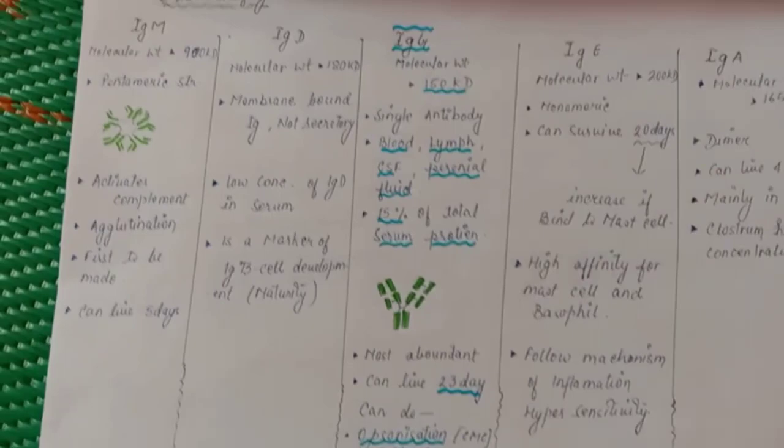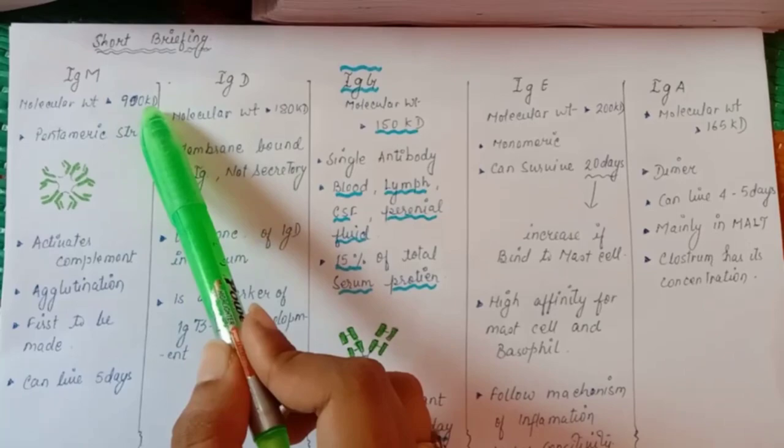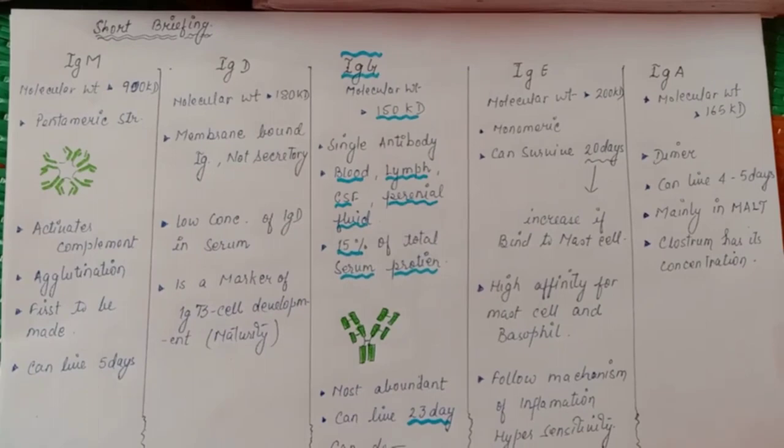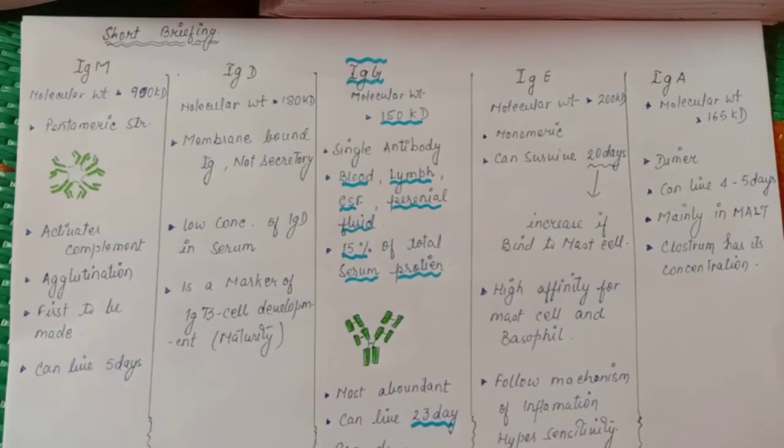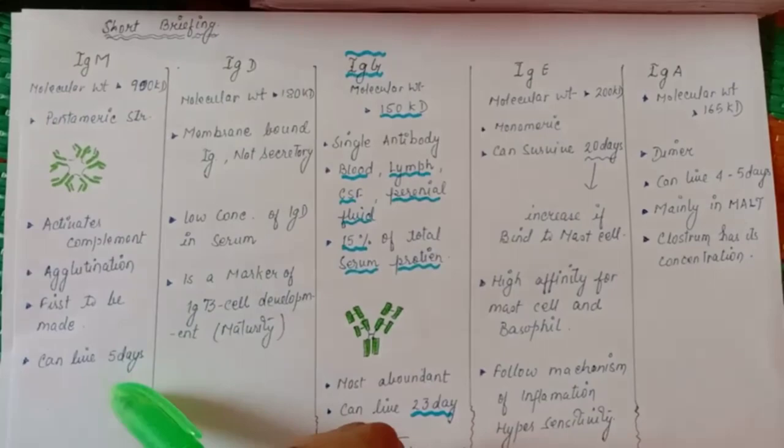Now you see IgM. IgM, when we talk about, it's about 900 kilodalton. Why is it so heavy? Because pentameric forms are present. This is the first antibody to be made. This is your homework: you have to find out at what stage of embryo this antibody is formed. It can live up to 5 days.